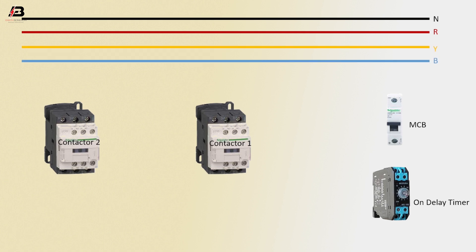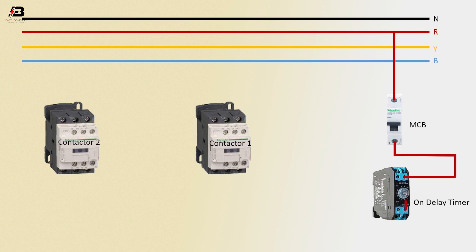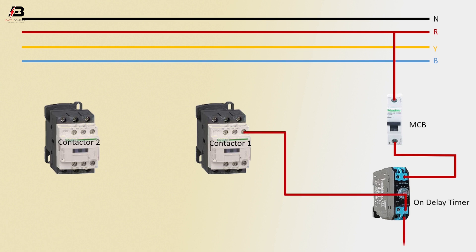Third phase connection. First phase connection to MCB circuit breaker. Phase connection from MCB to on-delay timer. Phase connection from on-delay timer to contactor coil connection. Output connection from on-delay timer to contactor two coil connection.